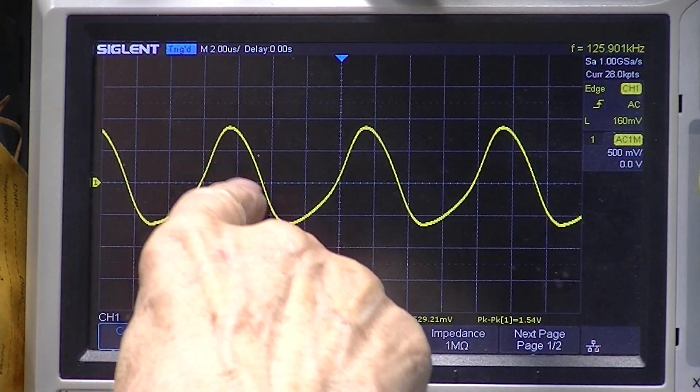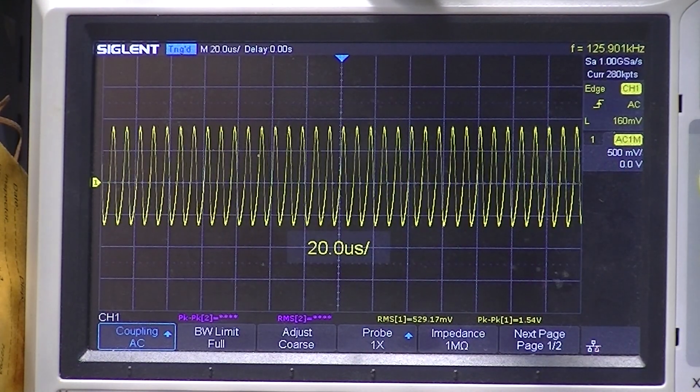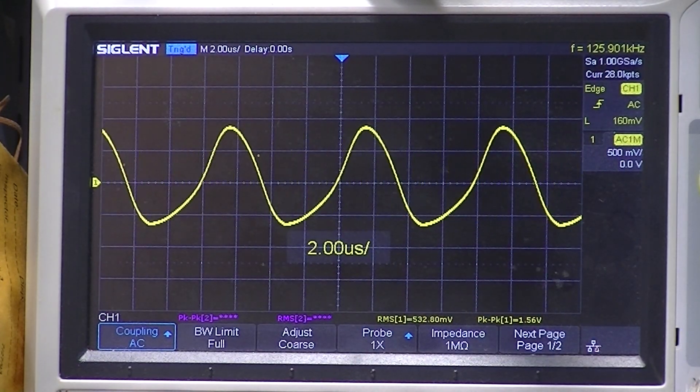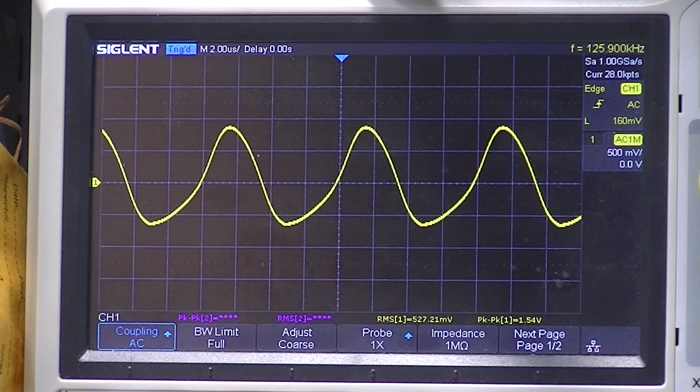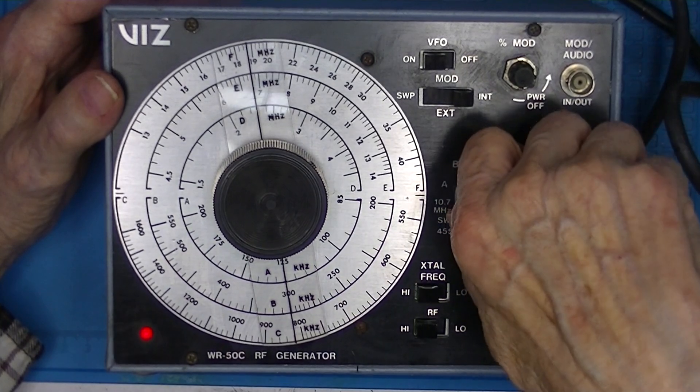And I intend to use the same scale. I'll change the sweep rate as we change frequency. And it's 1.5 volts peak to peak.